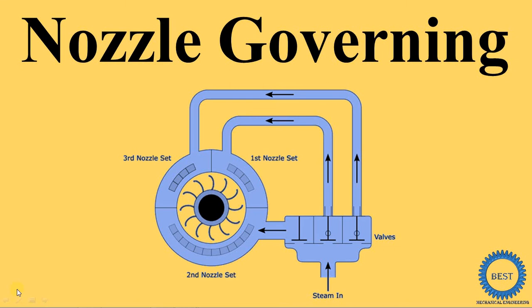In this video I explain nozzle governing for a steam turbine. From the name we understand that the nozzle is divided into a number of groups — that's why its name is nozzle governing. In this figure you see there are a number of nozzles, divided as a first nozzle set, a second nozzle set, and a third nozzle set.